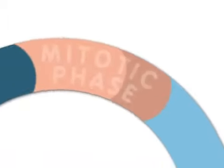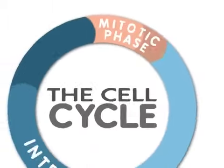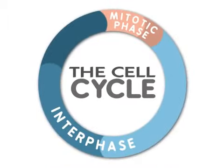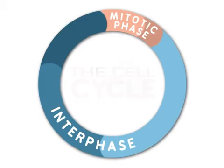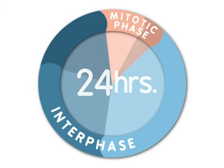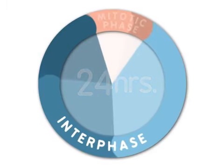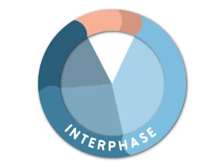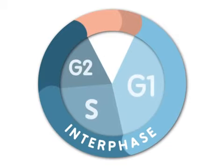Mitosis is only one part of what is called the cell cycle. For many eukaryotic cells, a cell is duplicated every 24 hours. Most of the life of a cell is spent in interphase. Interphase consists of three stages called G1, S, and G2.